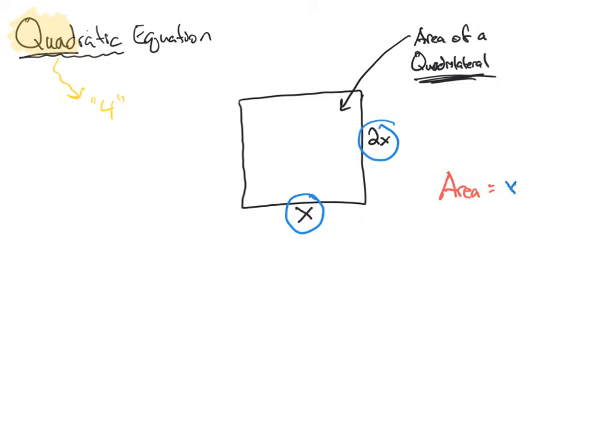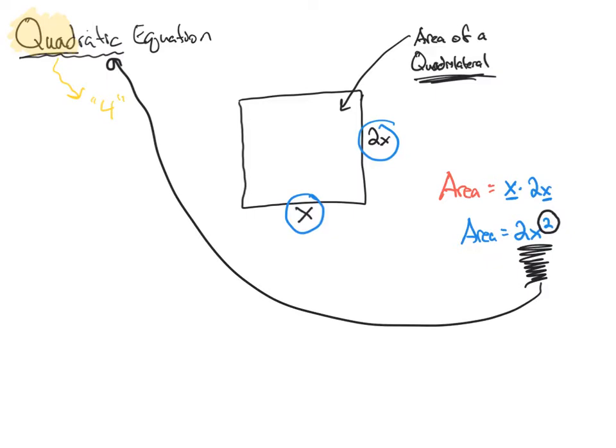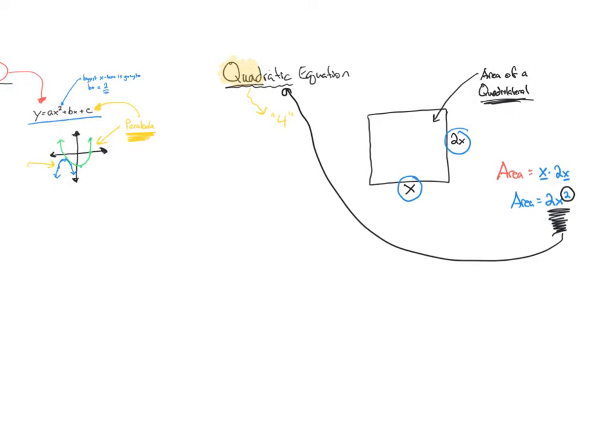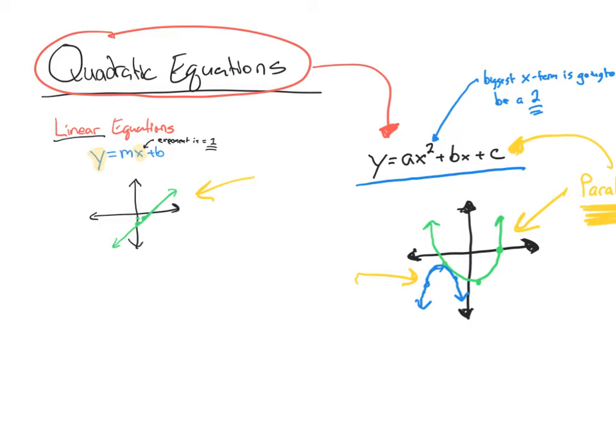Well, you would probably say it's base times height. So, I would say x times 2x. Now, if I do that, area equals 2, and since the bases are the same, what do we do to the exponents? We add them. 2x squared. Wait. Time out. The biggest exponent that I see on there is a 2. If you see a 2 on your exponent, guess what? We're dealing with a quadratic equation. So, there is actually where the term quadratic comes from. It comes from the geometric quadrilateral shape, and we're really speaking to the area of that.